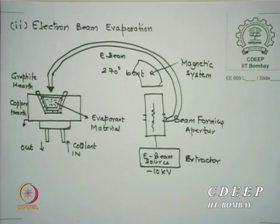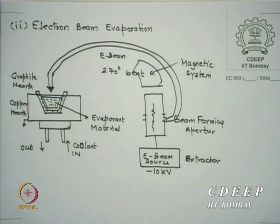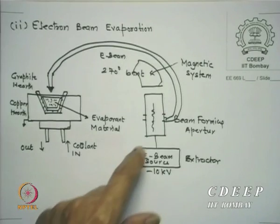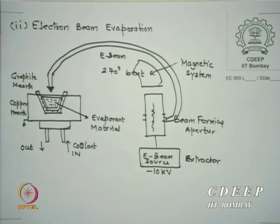The basic idea of electron beam evaporation is the following. There is a source of electrons, which can be from a filament. Then you have an extractor voltage — similar to an implanter, you have the source as well as the extractor. There is some kind of beam-forming aperture with voltages applied, and bendings are possible. Then this electron beam passes through a magnetic system.